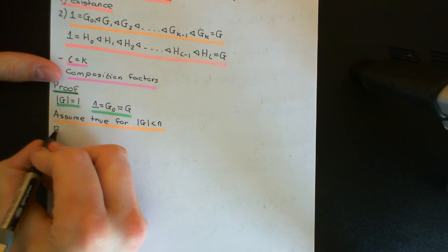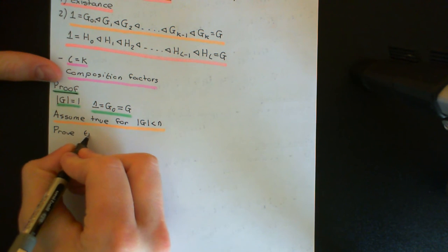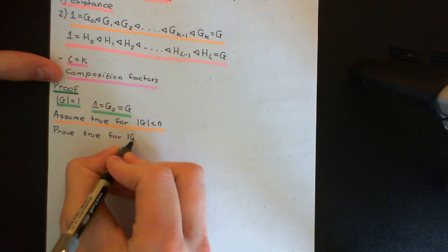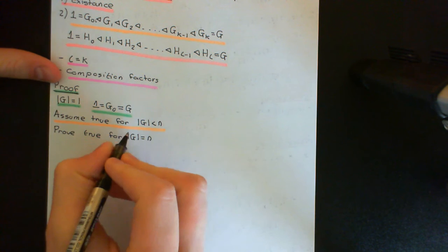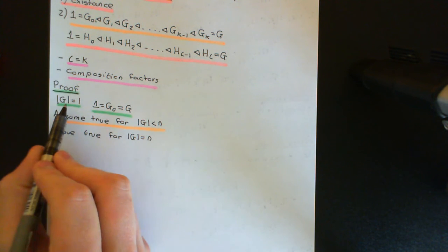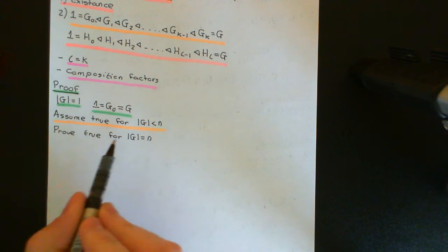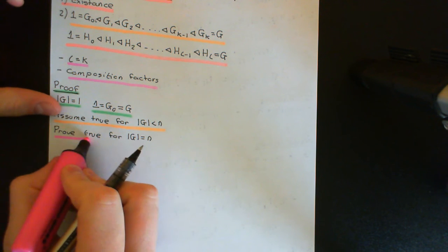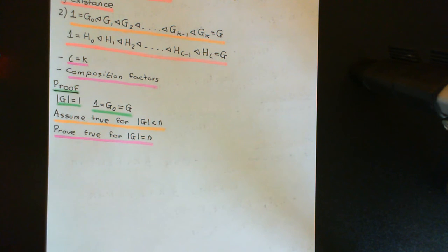Now we need to prove that it's true for a group that has order equal to n. Once we've done this, because it's true for order one it will be true for order two, and because it's true for orders one and two it will be true for order three, and so on — proving it's true for groups of all finite orders.